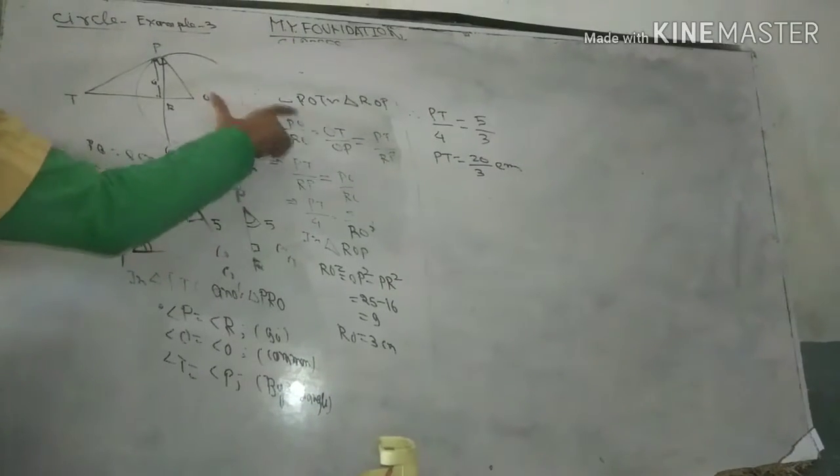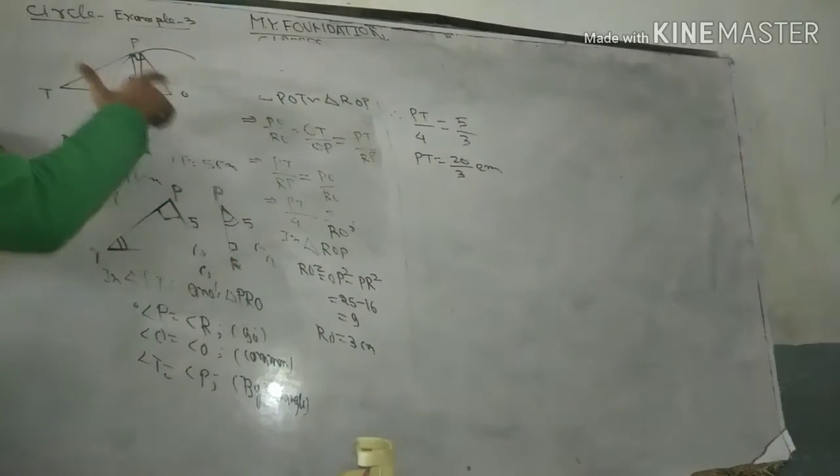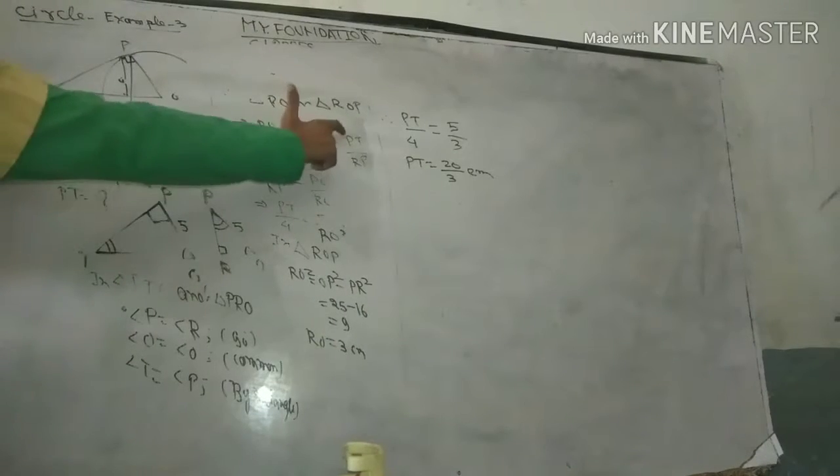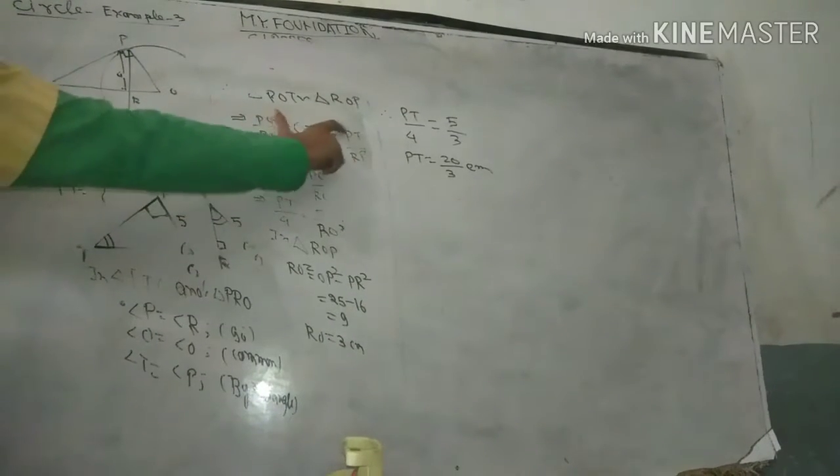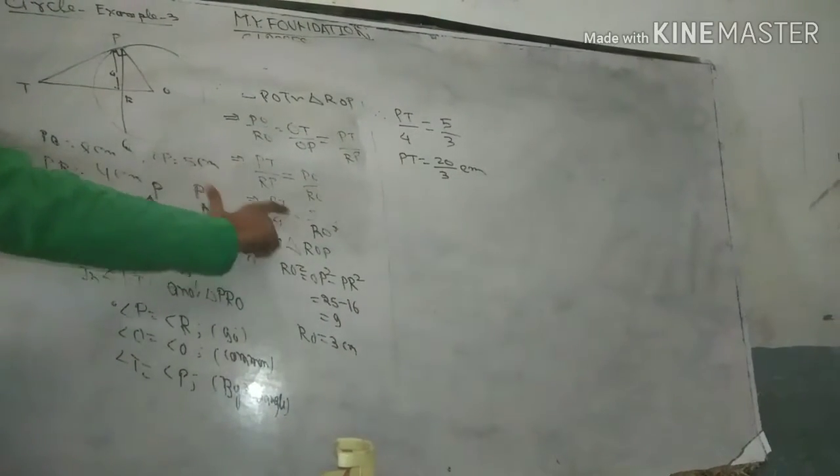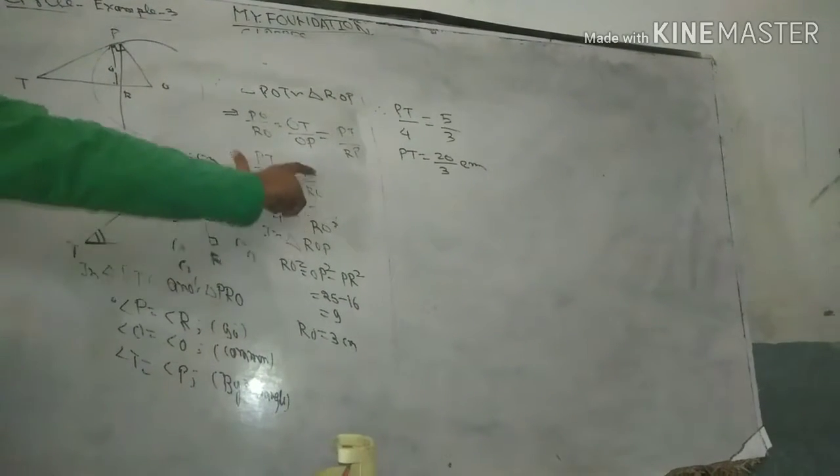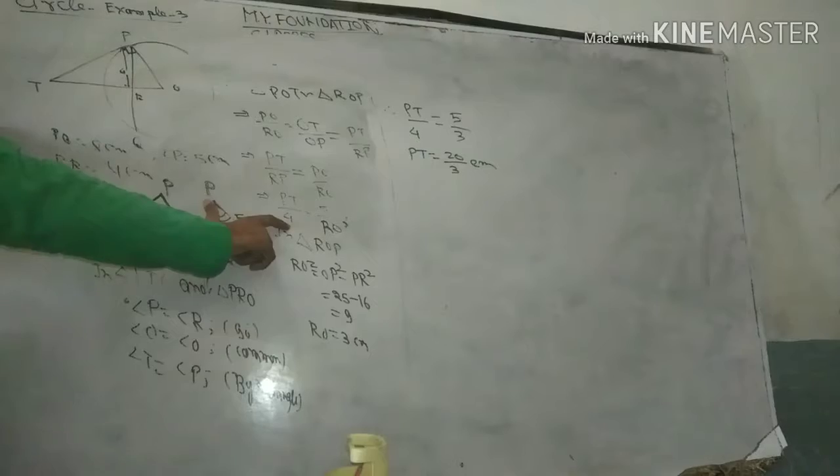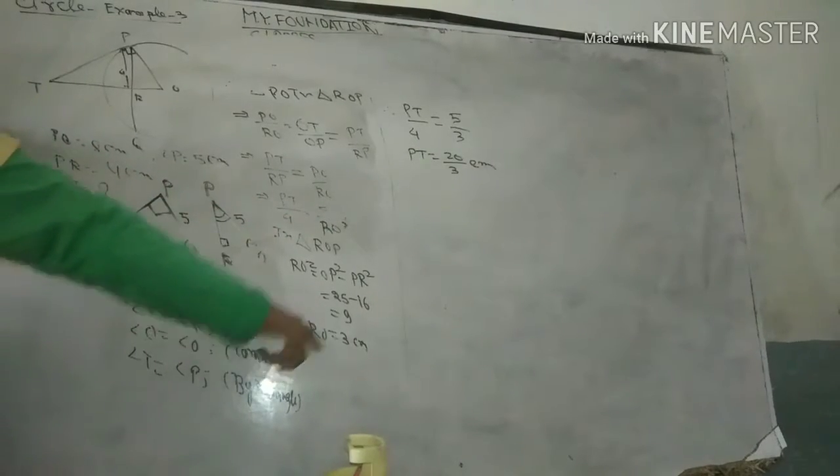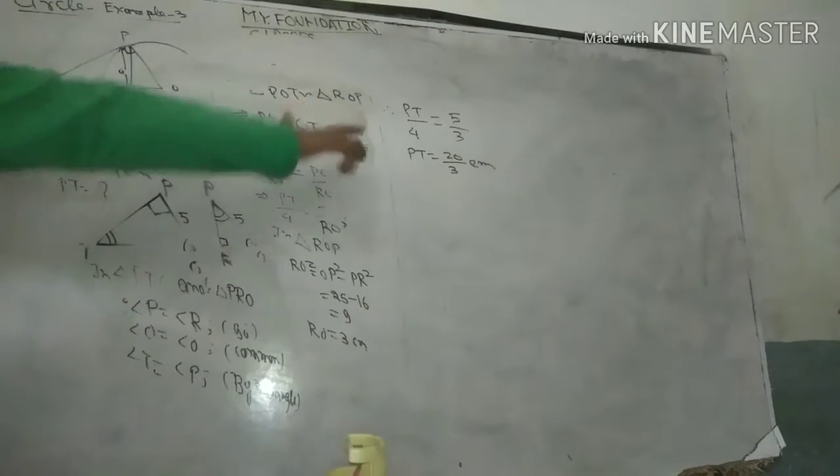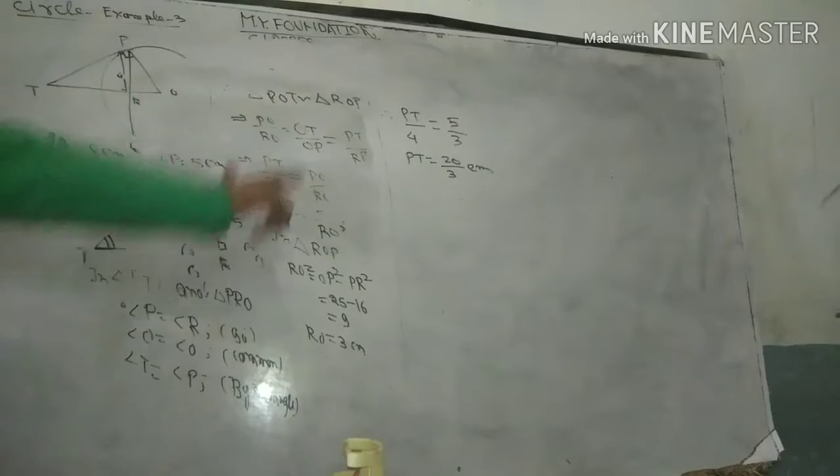We have PO and RO both equal to 5 cm. We can use the proportion PT upon RP. From the similar triangles, we will get the value of PT.